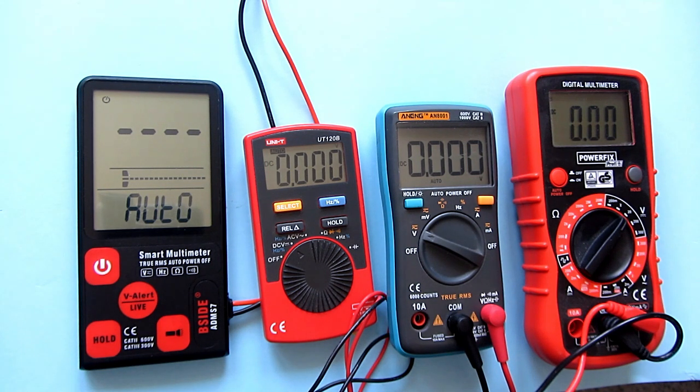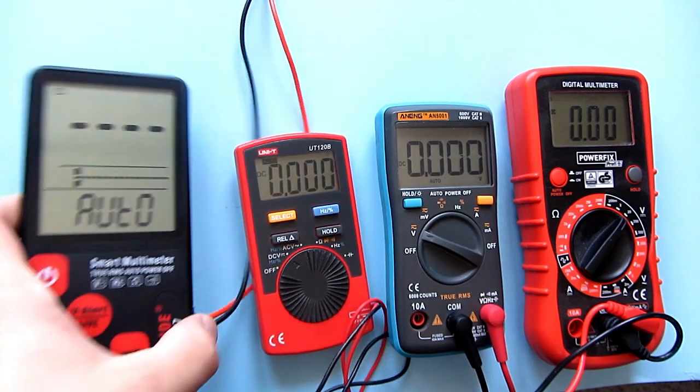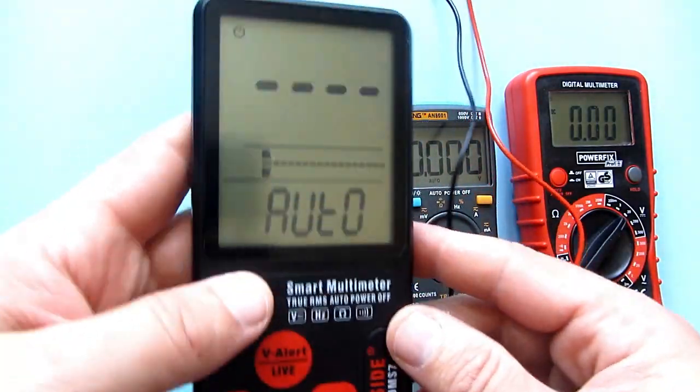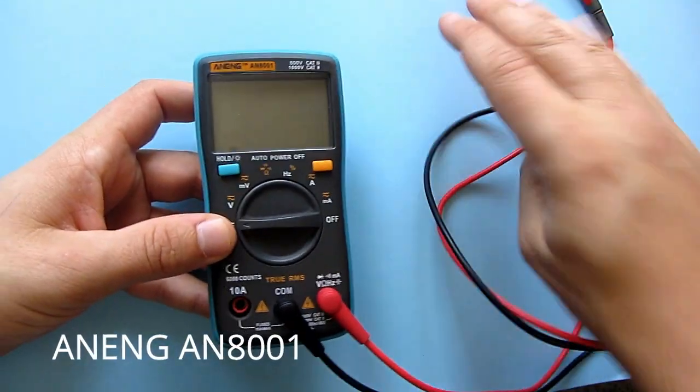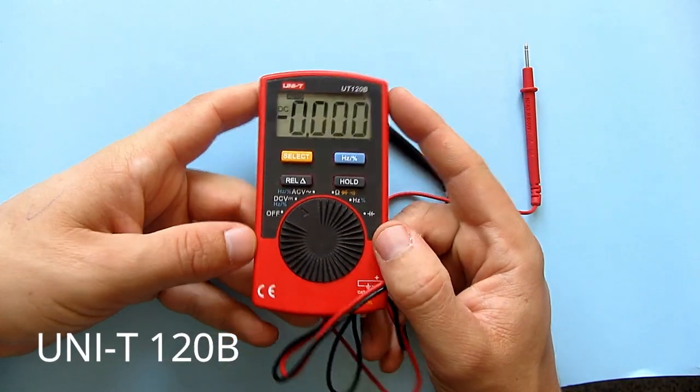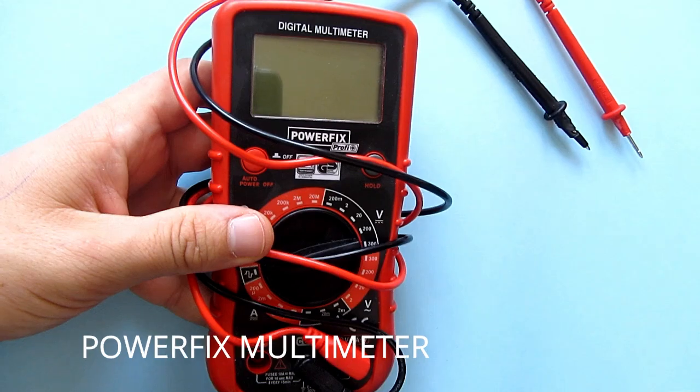Price of this smart multimeter is $13 on eBay. I will compare it with this Yang multimeter, Unity multimeter, and this Powerfix multimeter.